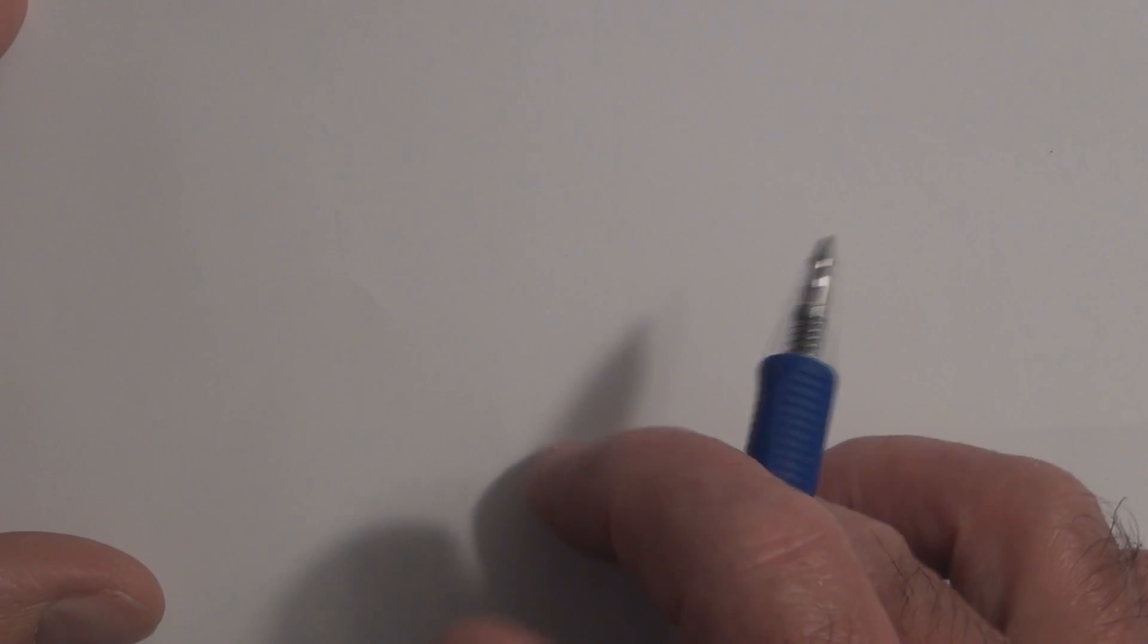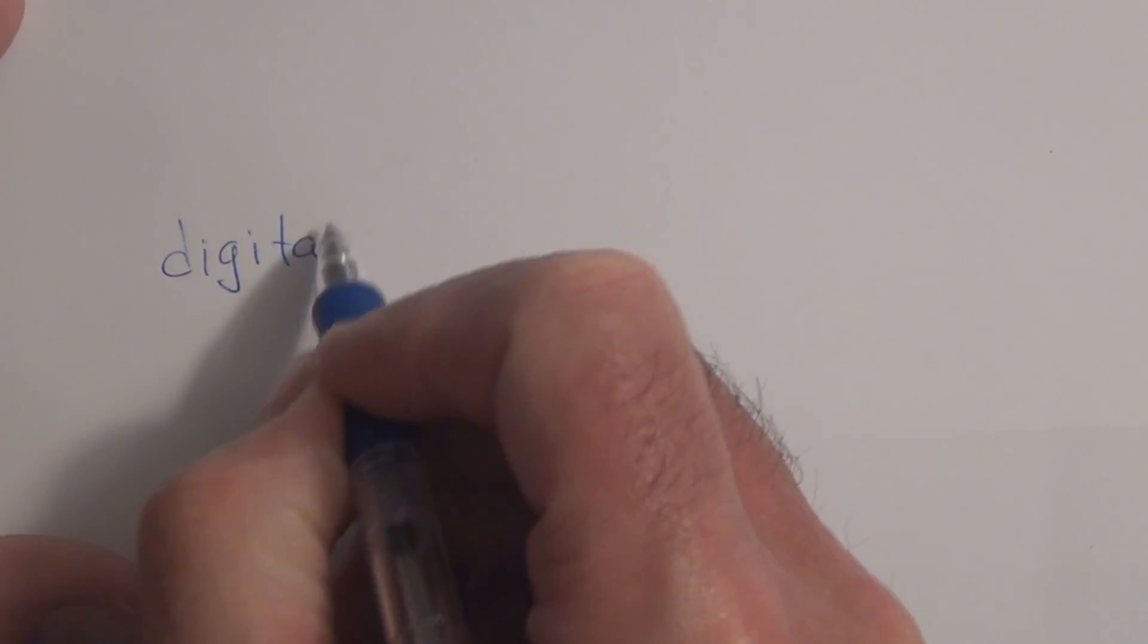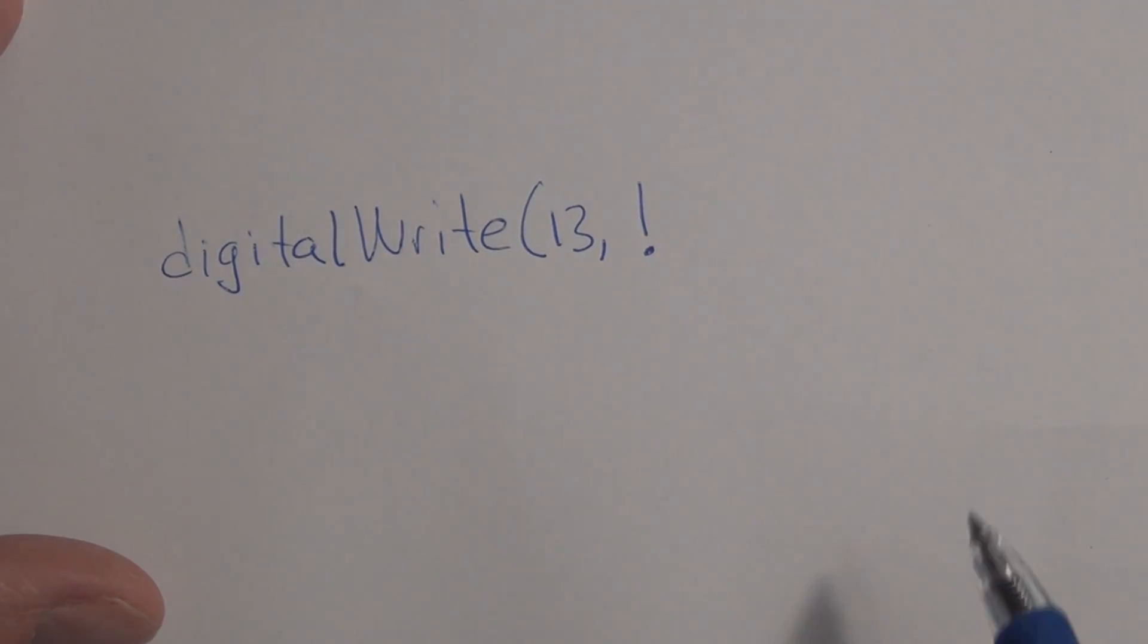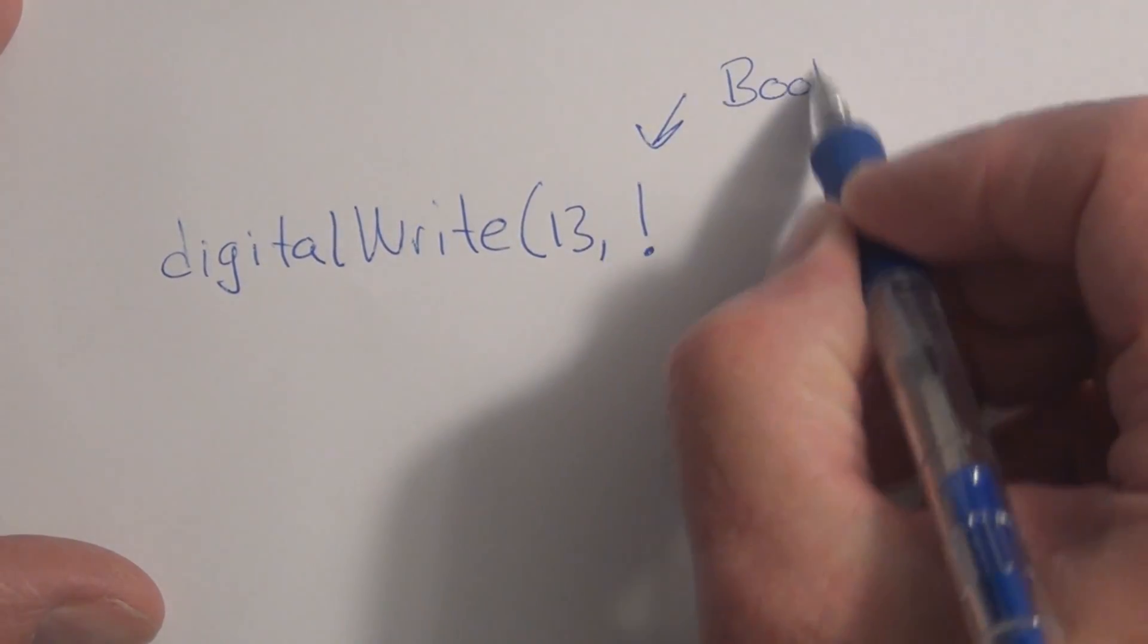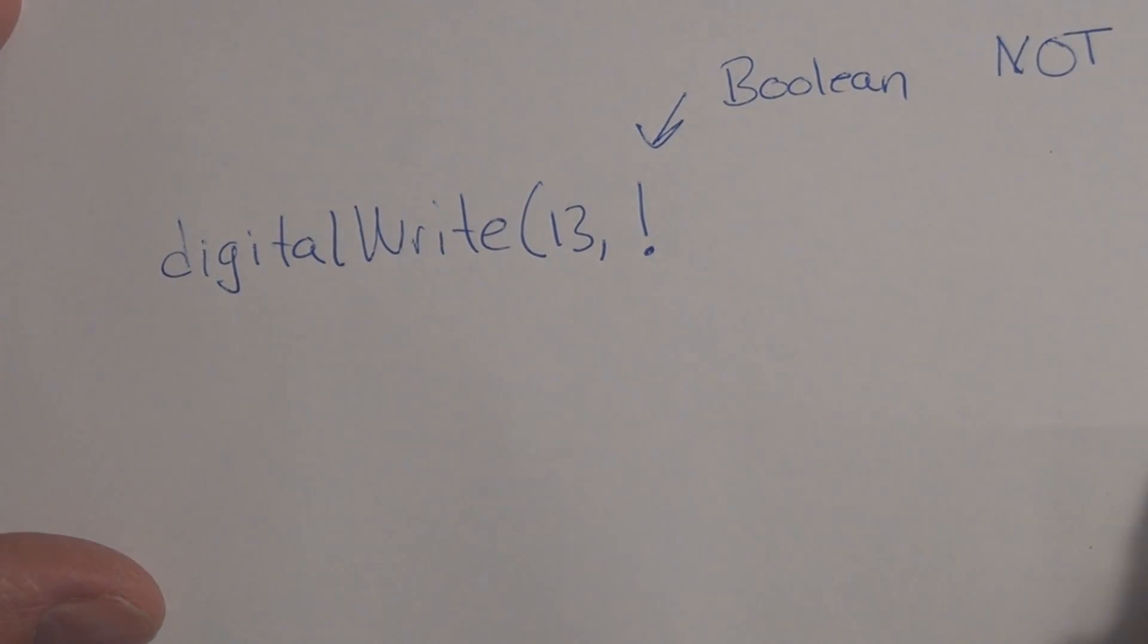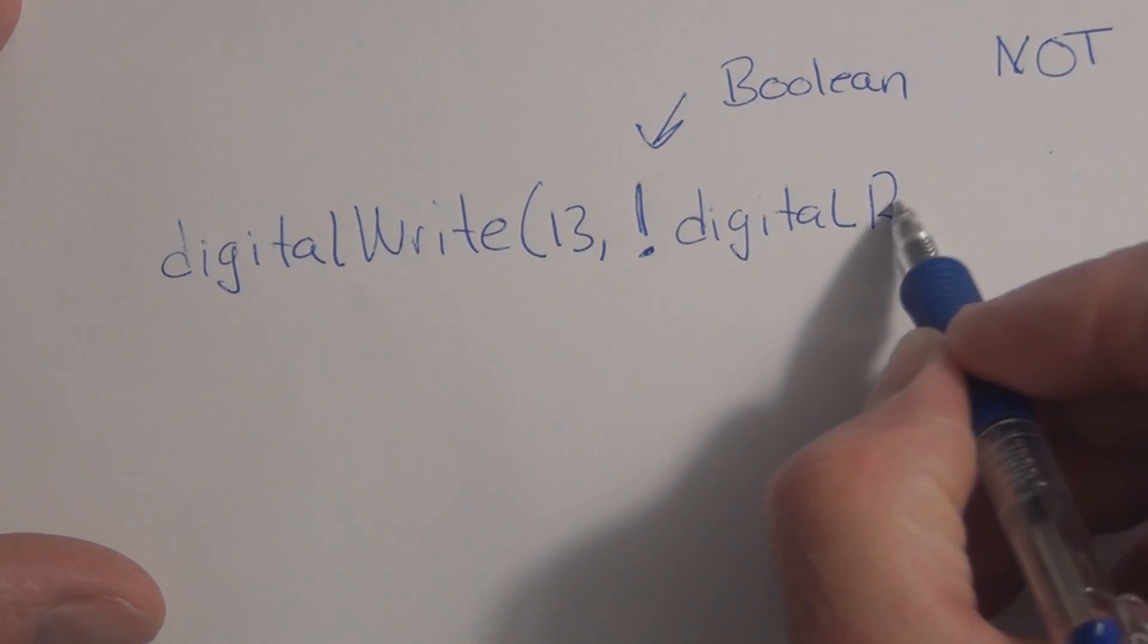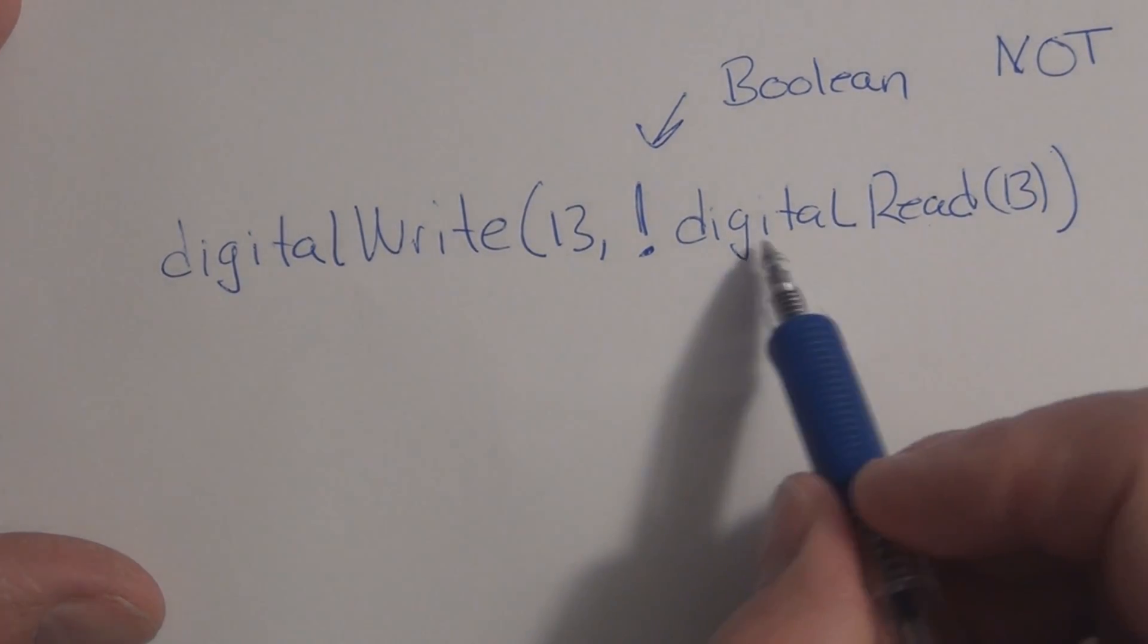There is another way to toggle an I/O pin with one line of code. If we use, again, pin 13, digitalWrite 13, we can use an exclamation mark, which is a Boolean operator instead of a bitwise. This is a Boolean operator and this is equivalent to NOT. If we do an exclamation digitalRead on 13, what this does is it looks—a digitalRead on an output pin returns either a high, a 0 or a 1, it returns either a low or a high depending on the state of that pin.